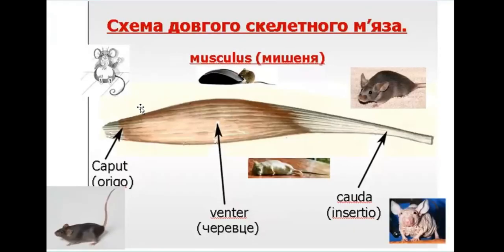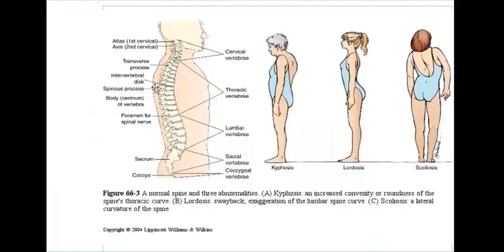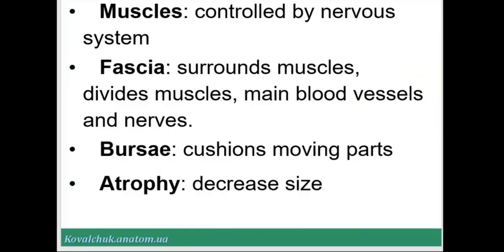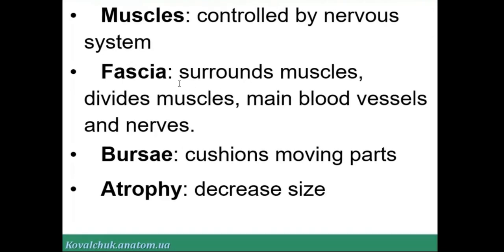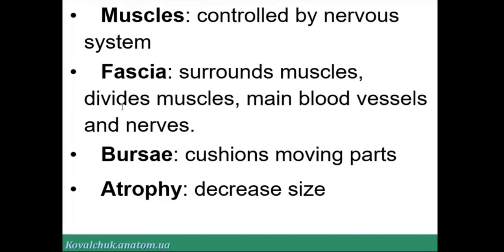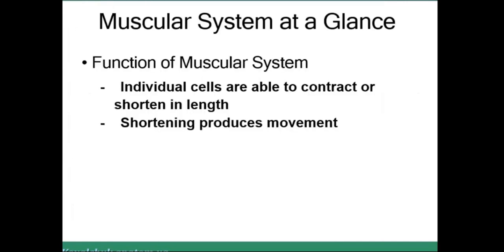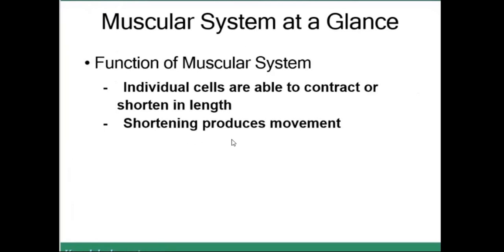What does the word 'muscle' mean? Because it has a head, a body, and a tail — in Greek, the word for muscle relates to this shape. It is also important to note changes in the structure of the spine and other organs. Muscles are controlled by the neural system. Fascia is a special structure that surrounds muscles, divides muscles, and contains main blood vessels and nerves. Bursa cushions moving parts, and atrophy means a decrease in size.